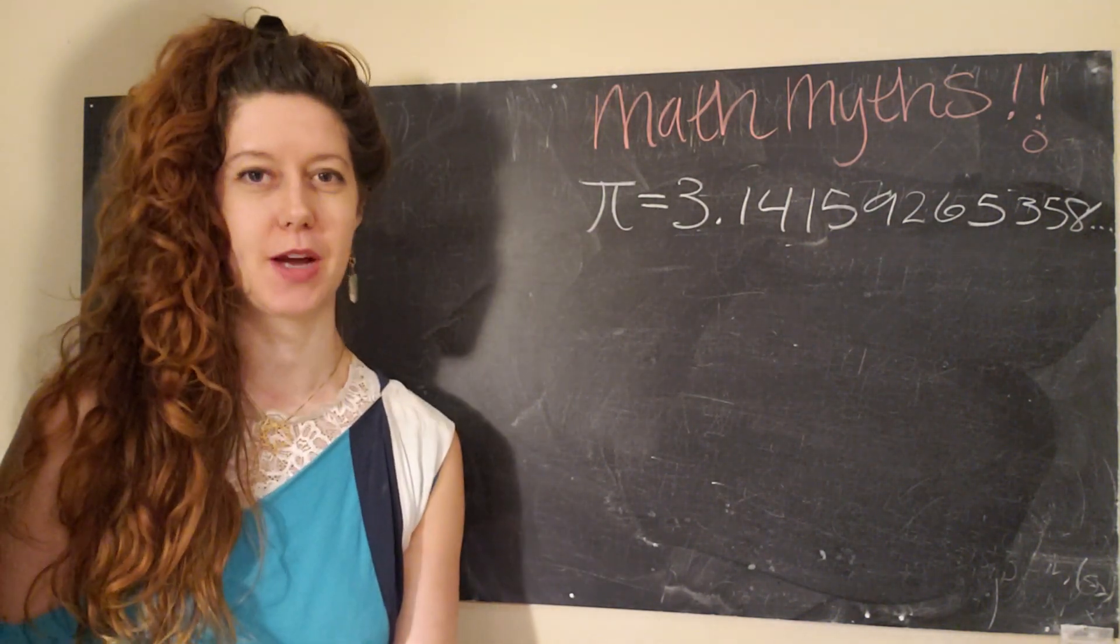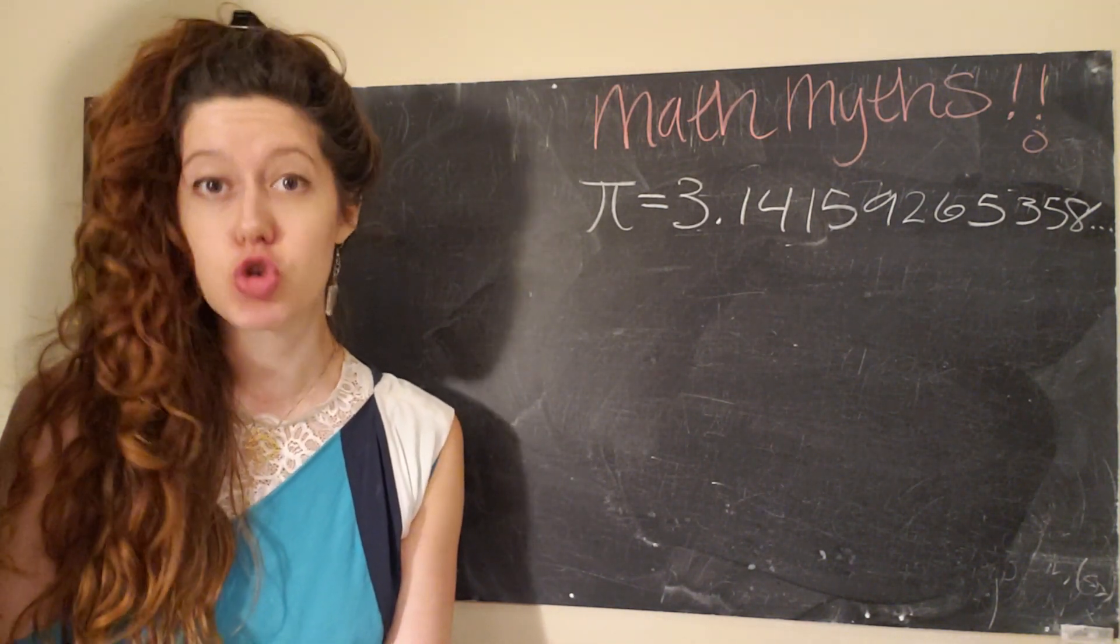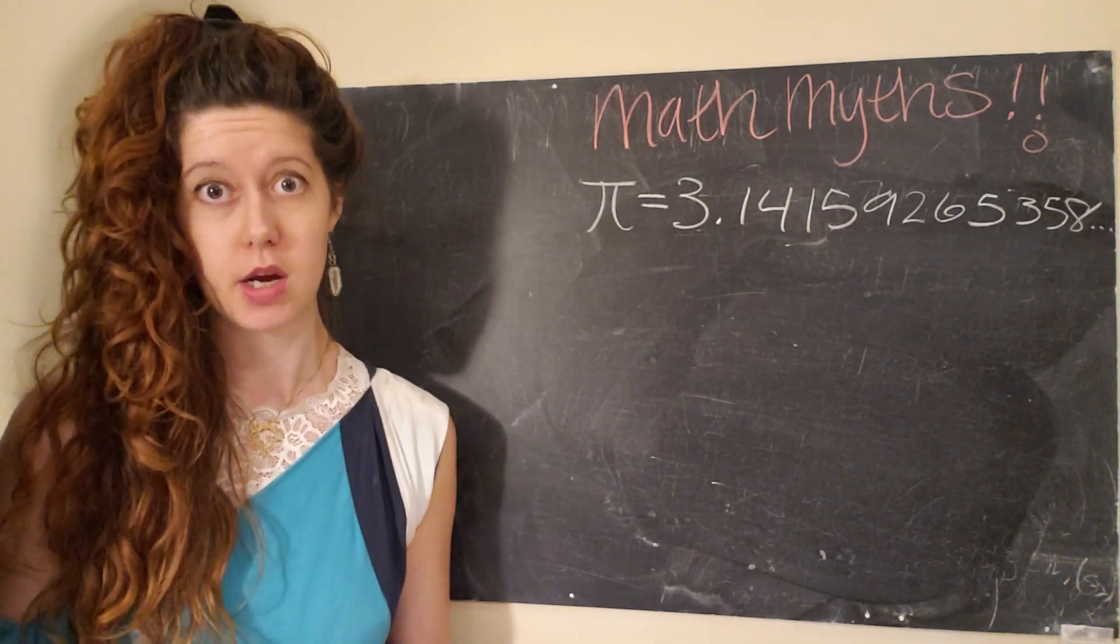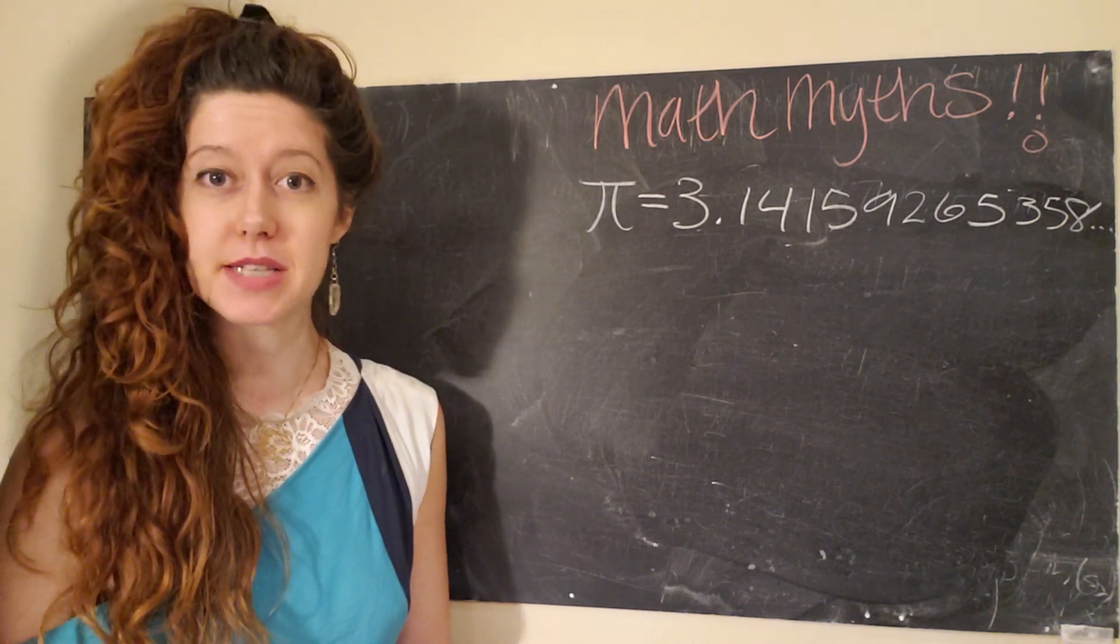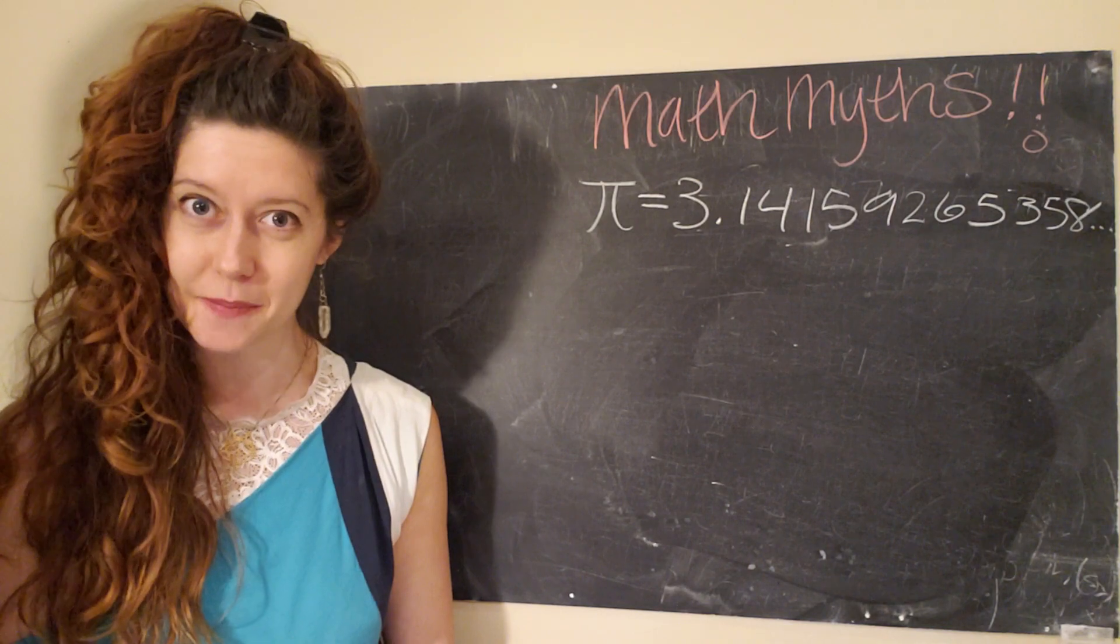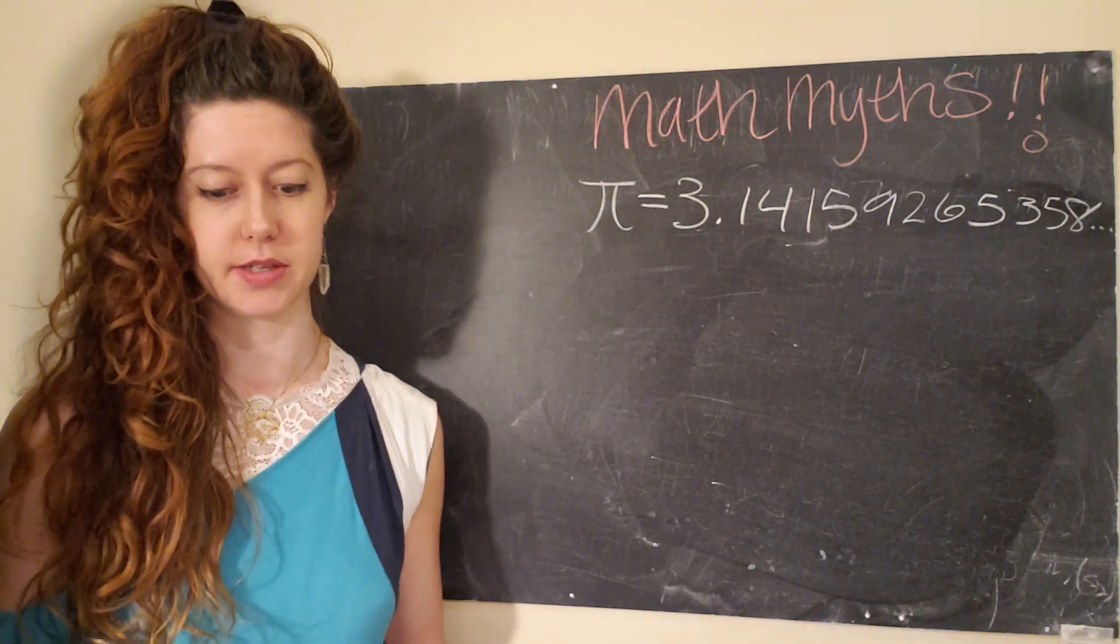So this math myth comes from one of my friends on Instagram, and they asked, is it true that pi contains all possible combinations of numbers or number strings, and does that mean that it could include other constants like e? So this is a really interesting question, and it was fascinating doing research on this.